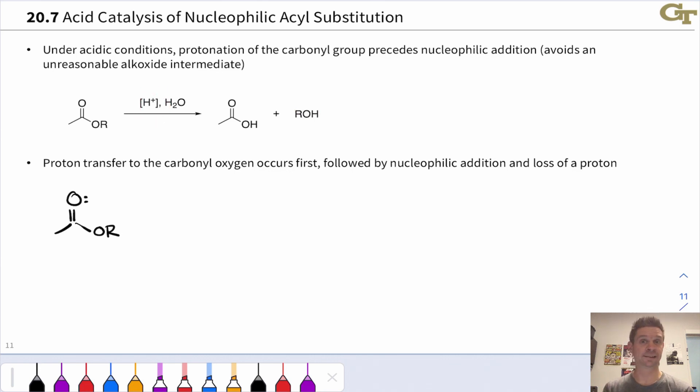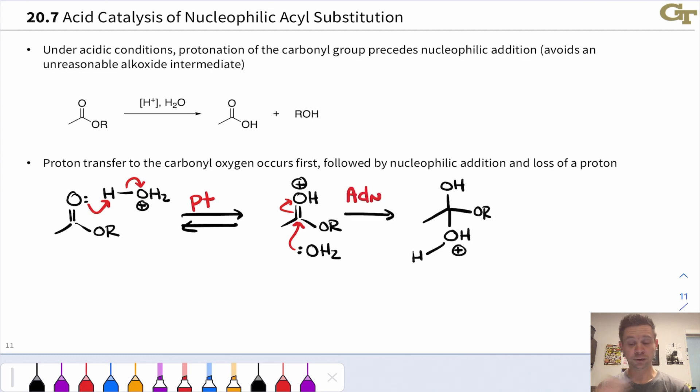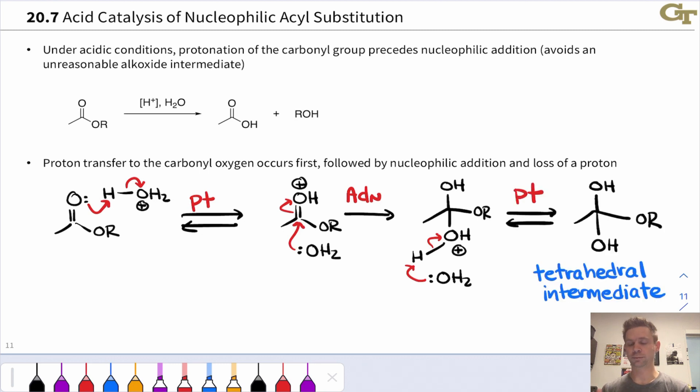Under the acid-catalyzed conditions, under the acidic conditions, proton transfer to the carbonyl oxygen occurs first to create a protonated carbonyl intermediate. This is more electrophilic than the starting ester and is susceptible to a nucleophilic attack, relatively easy nucleophilic attack by water at this point. This is a nucleophilic addition elementary step, analogous to that first step of the sort of canonical SNAc mechanism. And after deprotonation of this, we get the neutral tetrahedral intermediate.